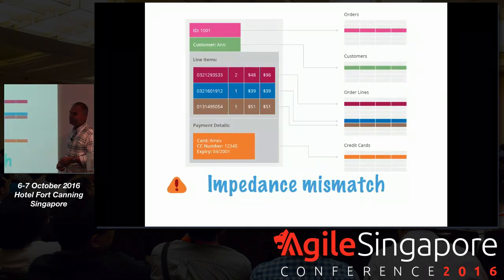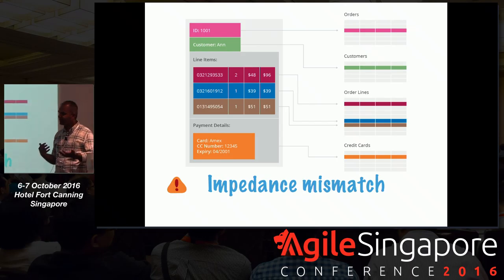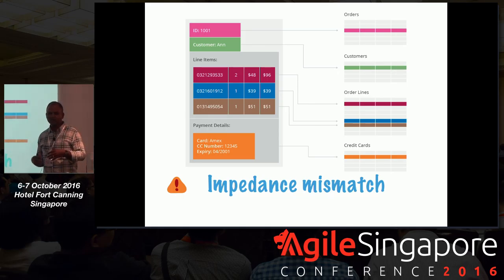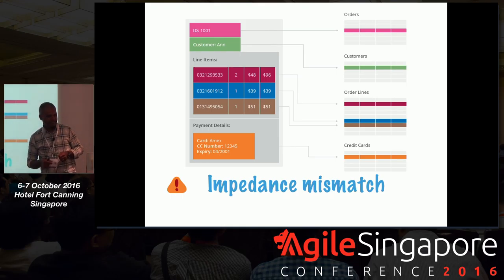The other notion is the impedance mismatch between the way developers think about objects and the way data is stored. Here's a nice customer object with line items, invoices, and payment — but when it goes into tables, you have separate tables for orders, customers, order lines, and credit lines. There's a big impedance mismatch, and to reconstruct you need an ORM mapping layer. Back in 2003 or 2004, someone mentioned ORM as the Vietnam of computer science, and I still think it stands true.